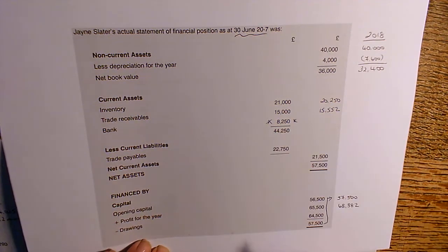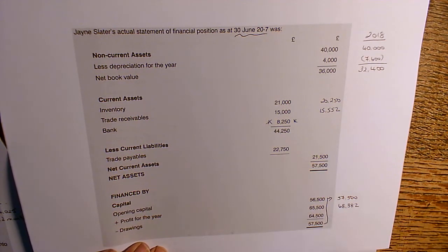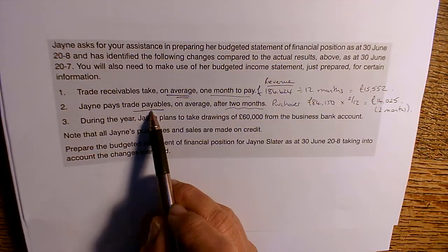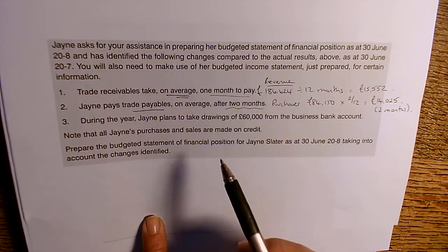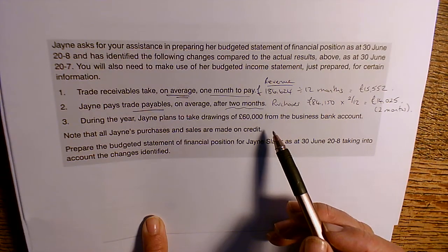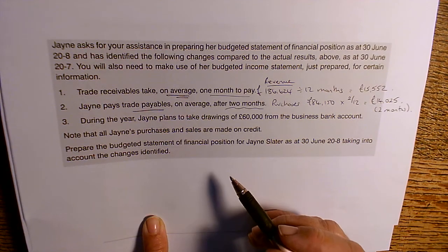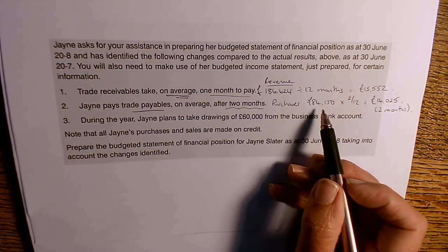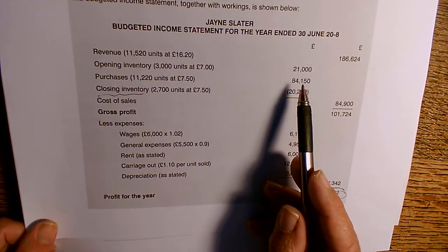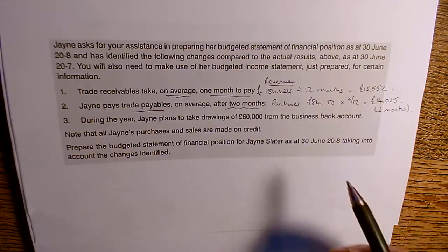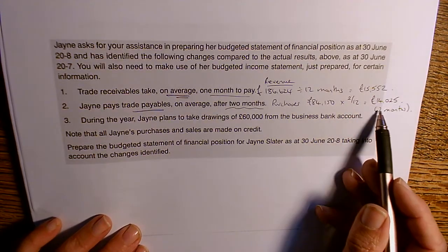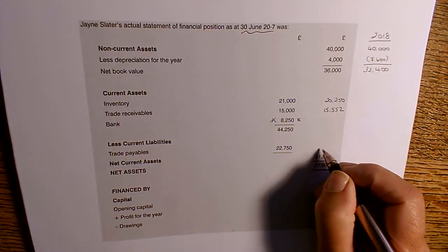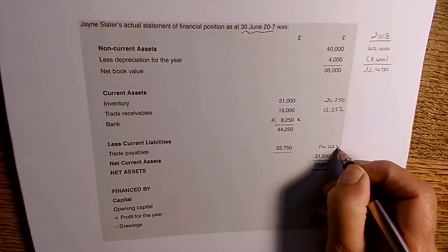The bank balance we'll come back to at the end. For trade payables, we use the same process as trade receivables. She pays suppliers on average after two months, so at the end of June 2018 she'll still owe two months' worth — May and June's purchases. Her total purchases for the year are £84,150 from the budgeted income statement. Multiplying by 2/12 gives trade payables of £14,025.